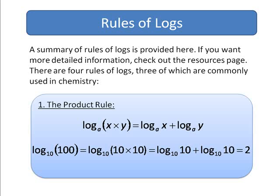The first is the product rule. This is very simple. It says log of one thing times another. So log of x times y is equal to log of the first plus log of the second. Log x times y equals log x plus log y.